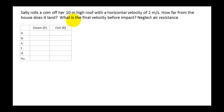Hey guys, it's Mr. Post, and on today's video I'll be looking at a two-dimensional kinematic problem. In this case, Sally rolls a coin off of her 10-meter high roof with a horizontal velocity of 2 meters per second. How far from the house does her coin land? And I want to know what is the final velocity before impact.